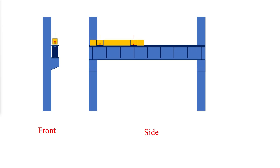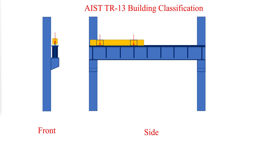We will start by classifying the buildings with cranes. Crane building classifications have been established in the guide for the design and construction of milled buildings AIST TR-13 as classes A, B, C and D.